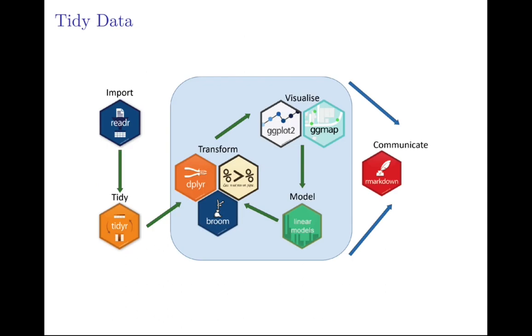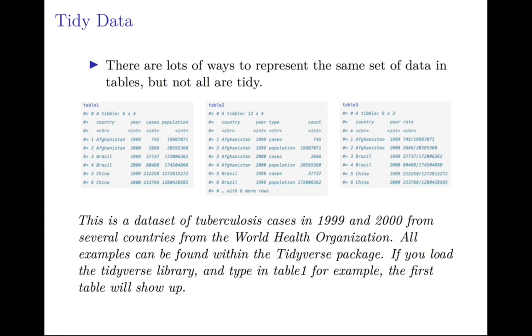Looking back at our schematic for working in tidyverse, we're going to be talking right now about tidying your data with tidy R. There's lots of ways to represent the same set of data in tables, but they're not all tidy. Here's an example of three different ways to represent the same data set. This is a dataset of tuberculosis cases in 1999 and 2000 from several countries from the World Health Organization. All examples can be found within the tidyverse package. If you load the tidyverse library and type in table1 for example, it will show up.